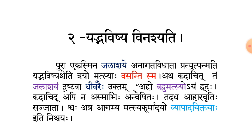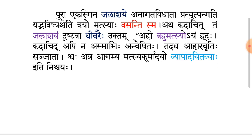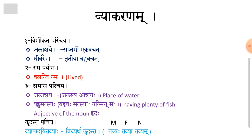Friends, there are also some words of grammar. Look here — the first word in dark blue color: Jalashaye. Jalashaye means 'in the pond.' It is a word of Saptami (seventh case). Jalashaye is masculine gender — just as Bale means 'in the boy' and Rame means 'in Ram' — so when you see such words, they are Saptami Eka Vachana (seventh case, singular), and in English the word 'in' appears in the translation.